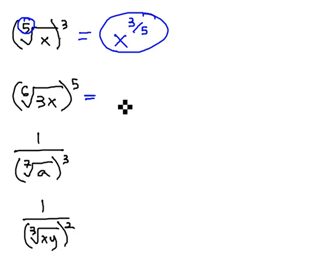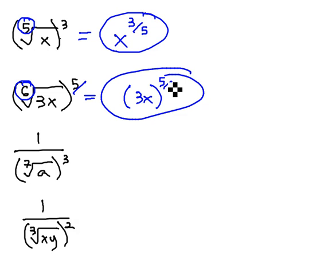Similarly, if there's more than one thing in the radical, sixth root of 3x to the fifth, we'll keep that 3x in parentheses so we know the entire thing is affected by the exponent. The index of 6 will become the denominator under 5. We end up with 3x to the 5 sixths power.